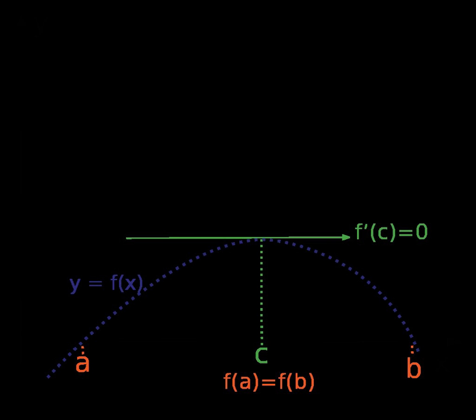If a real-valued function f is continuous on a proper closed interval [a,b], differentiable on the open interval (a,b), and f(a) equals f(b), then there exists at least one c in the open interval such that f'(c) equals 0.